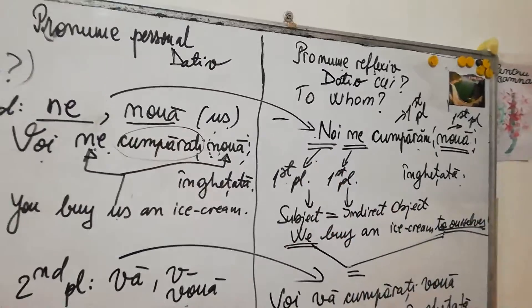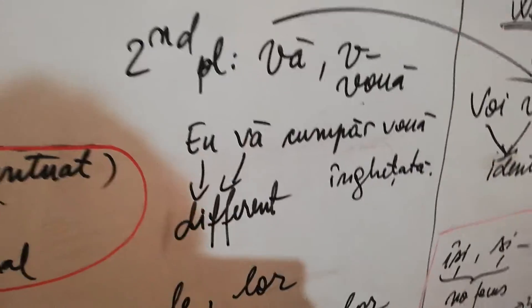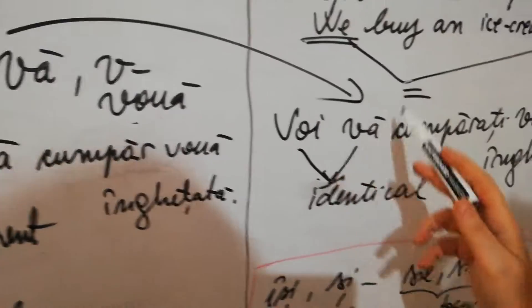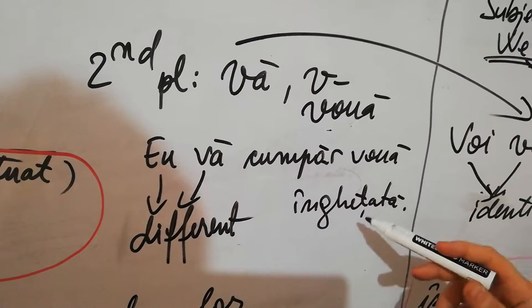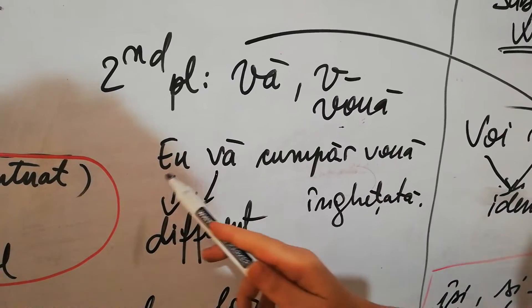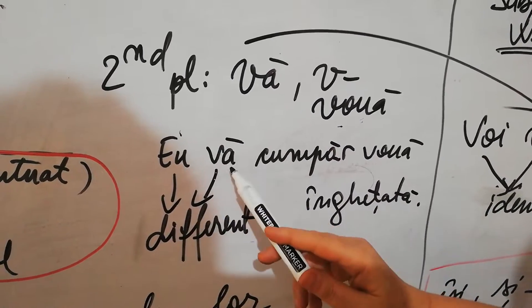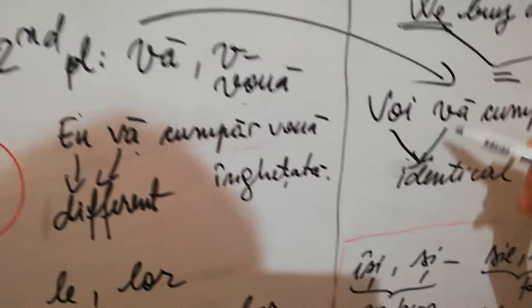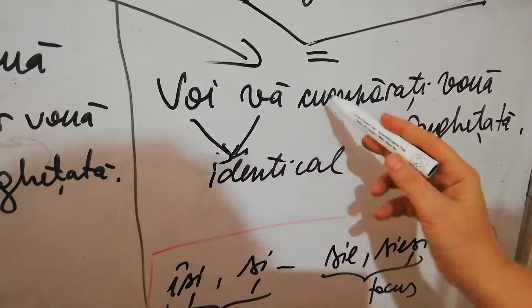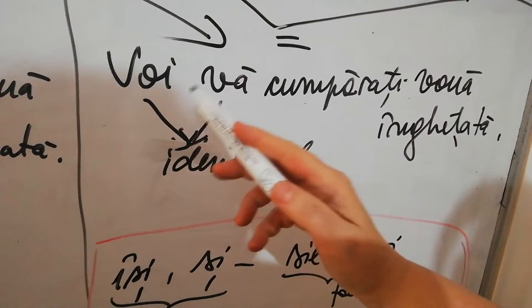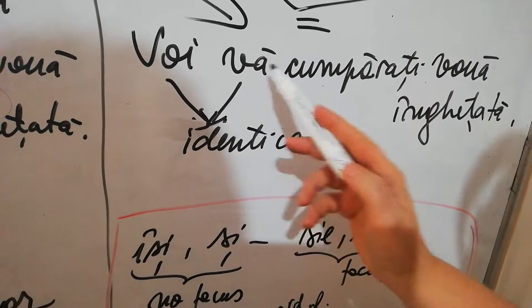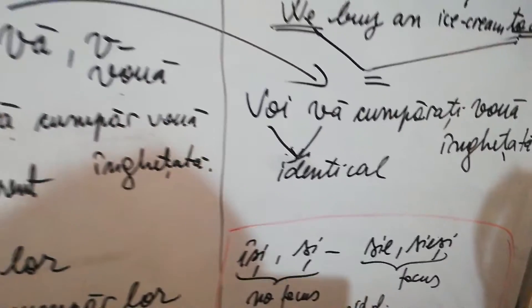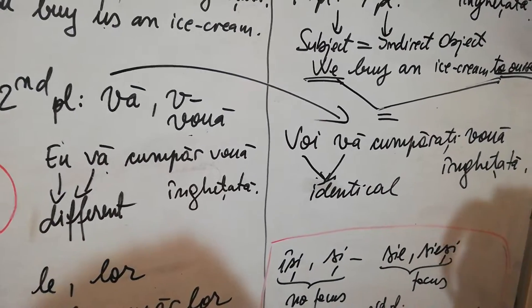For the second person plural, the reflexive pronoun also borrows the form from the personal pronoun. We have 'eu vă cumpăr vouă înghețată' - I buy you an ice cream. These two are different: first person singular and second person plural. And here: 'voi vă cumpărați vouă înghețată' - you buy yourselves ice cream. The two of them are identical, so you buy to yourselves ice cream.